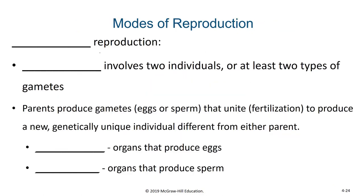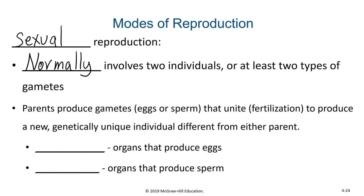Now we'll talk about how sexual reproduction is different. In sexual reproduction, this normally involves two individuals, or at the very least it requires two different types of gametes. There are some cases of hermaphroditic marine organisms capable of self-fertilization, but normally under ideal situations, sexual reproduction is between gametes from two different sources. The parents produce the gametes or sex cells, and they unite during fertilization, producing a new genetically unique individual different from either parent and likely different from the other siblings as well.